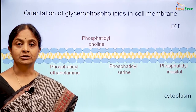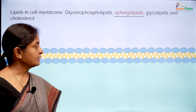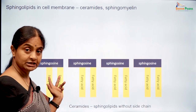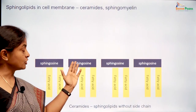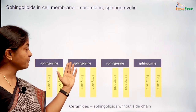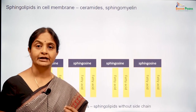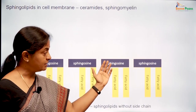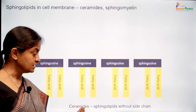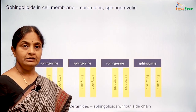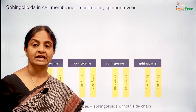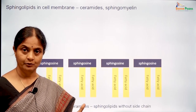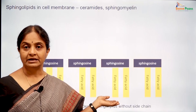We will now move on to the sphingolipids in the cell membrane. The backbone in a glycerophospholipid was glycerol, whereas in a sphingophospholipid, this backbone is made up of sphingosine or dihydrosphingosine bases. Sphingosine with two fatty acids and no other side chain is called a ceramide. Ceramides are waxy substances that make up the vernix caseosa — the vernix that coats a newborn when it is just delivered is made up of ceramides.